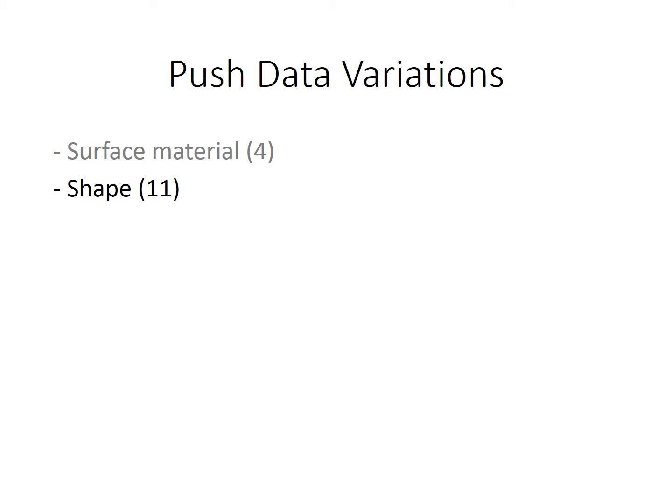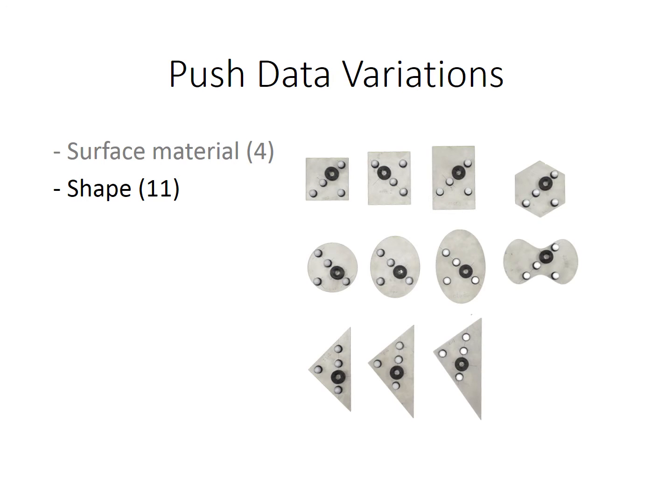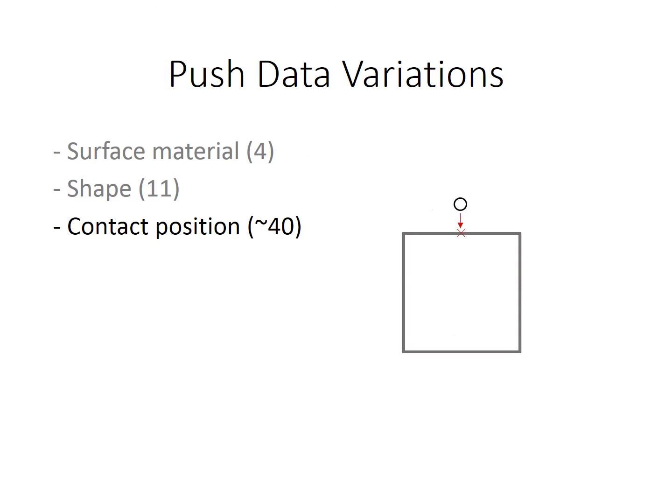Second, we have shapes such as rectangles, ellipses, and other shapes. Third, the pusher makes initial contact with the object on 40 different locations. And for each contact location, the pusher starts the contact with nine different orientations.